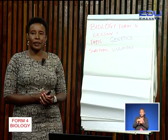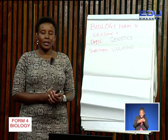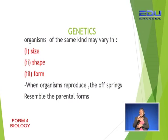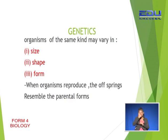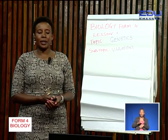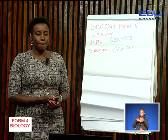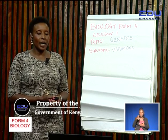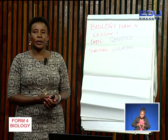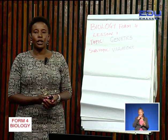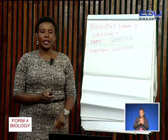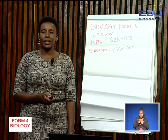Some organisms of the same kind may vary in size, shape, and form, despite the fact that they are offspring reproduced by the same organisms. These organisms are produced by the same parents, so somehow they will resemble their parental forms, but still show some differences. These differences are what we are referring to as variations.